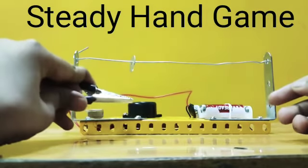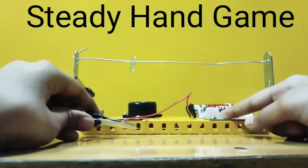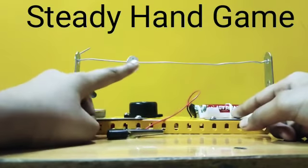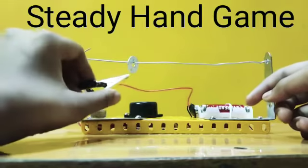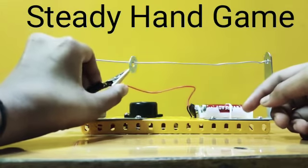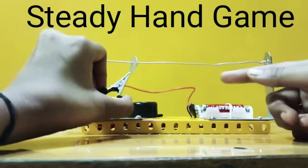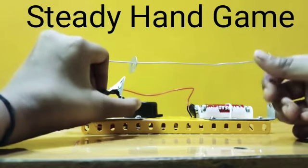For that, I have connected a crocodile clip to the battery and a washer on the insulated metal wire. So now I will put this crocodile clip to the washer and see what happens.